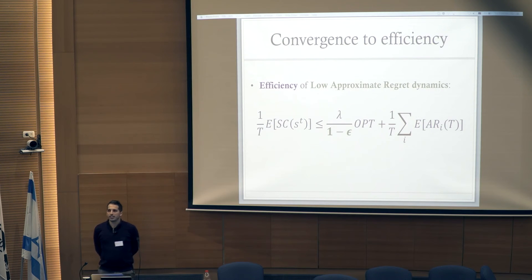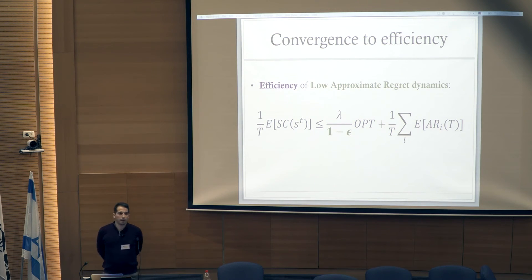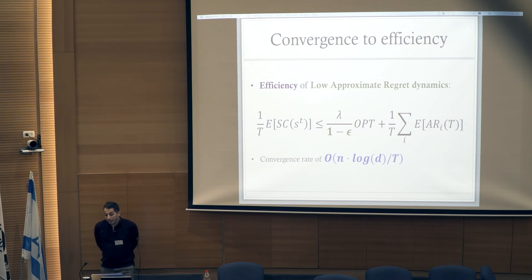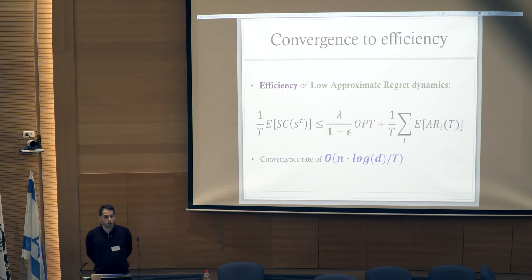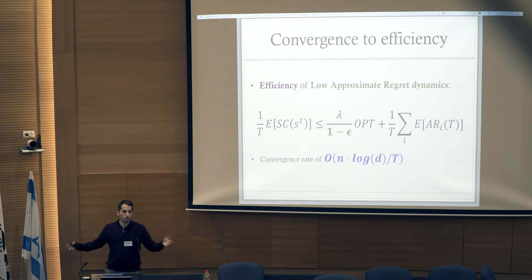The efficiency guarantees still hold for low approximate regret dynamics. We move the epsilon-times-cost term to the left-hand side, giving a small decrease: instead of price of anarchy lambda, we get lambda/(1-epsilon). But epsilon can be very small — instead of 2.5 you get 2.5001. Crucially, this allows us to show that learning dynamics converge to efficient outcomes at a rate of 1/T, and it holds for a broad range of algorithms.